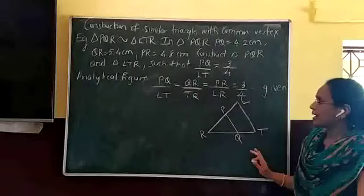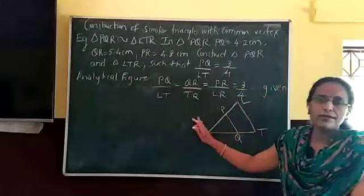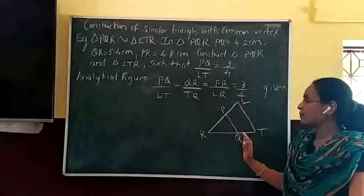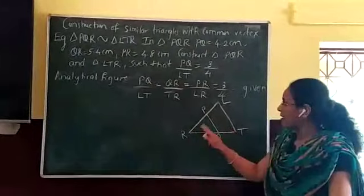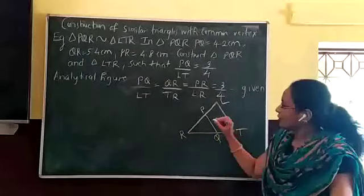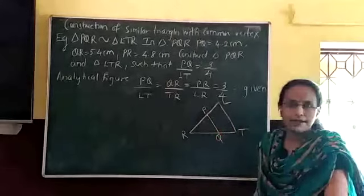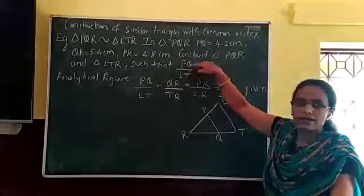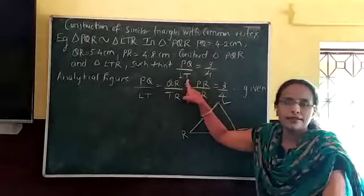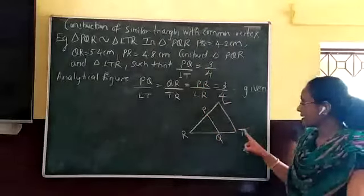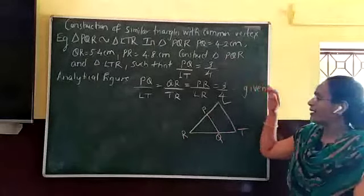After that, as usual, we must draw an analytical figure. In the previous construction there were two rough figures because they were two separate triangles. Here it is just one figure because both triangles PQR and NTR share a common vertex R. Now, how do we know that PQR is a smaller triangle and NTR is a bigger triangle? Just observe the ratio PQ upon NT — you get 3 by 4, which means PQR is the smaller triangle and NTR is the bigger triangle. The most important thing is first analyzing the ratio and drawing the rough diagram.